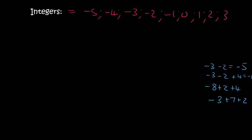All right guys, but now this isn't grade 3. We need to know how to do this without a number line, so let's start challenging ourselves. Think about this: 3 minus 8 — imagine the number line in front of you. If you have 3 and someone takes away 8, that would give you minus 5. Then if you have minus 5 and you plus 2, you would end up at minus 3.